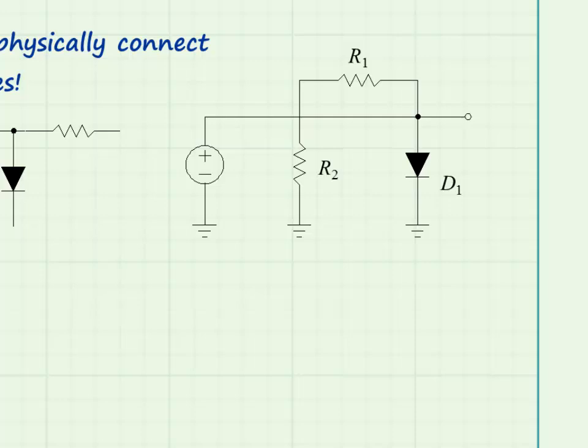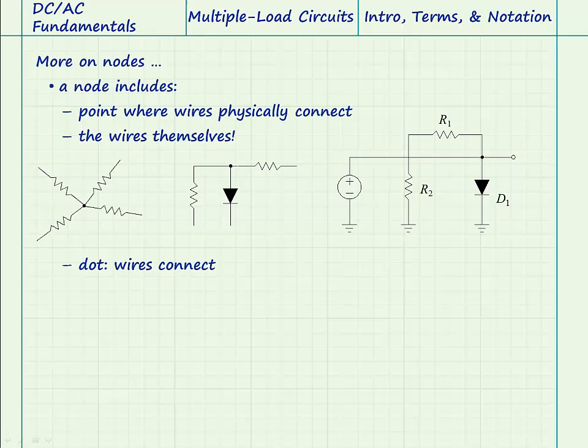Notice that the wire connecting resistors R1 and R2 does not have a dot where it crosses the horizontal wire. This means that the two wires cross but are not connected to each other. This wire is its own separate node. So, if there is a dot, the wires connect. No dot means the wires cross but do not connect.